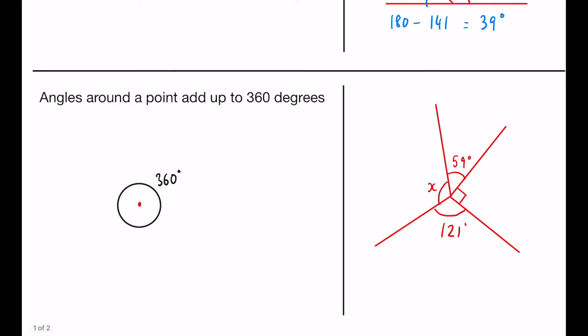And secondly, we have angles around a point, which add up to 360 degrees.